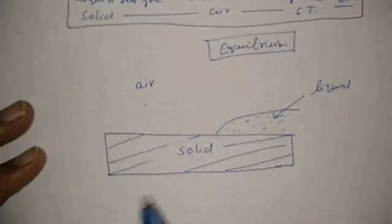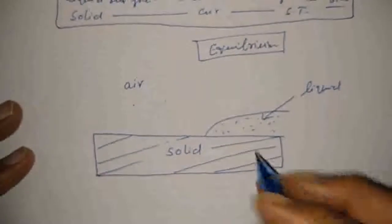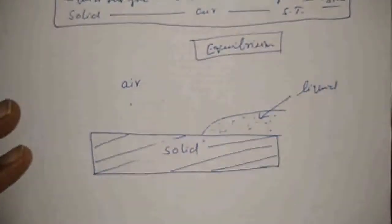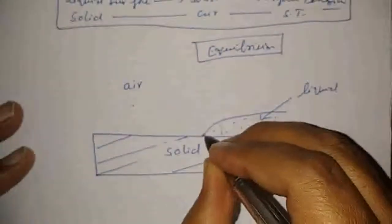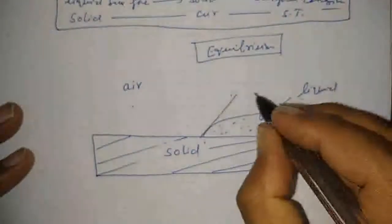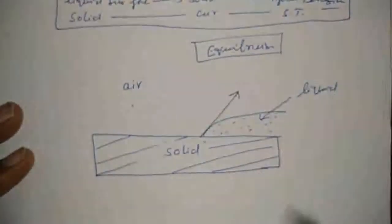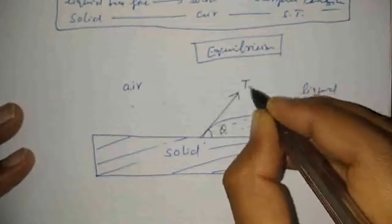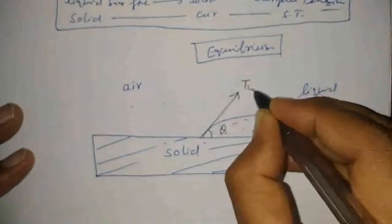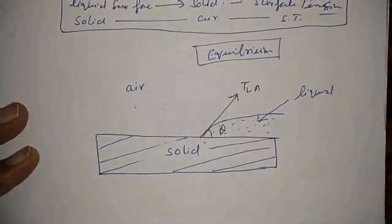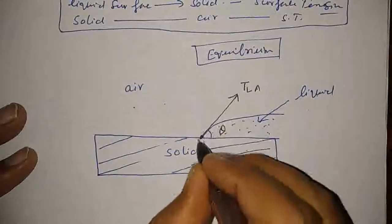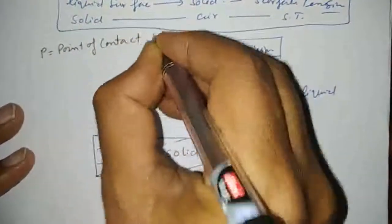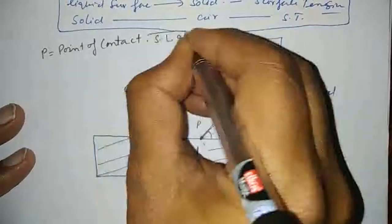Now see how the system is in equilibrium. This is solid and this is liquid. First of all, we are going to define the angle of contact by drawing a tangent here. This is the tangent, so this is the angle of contact between solid and liquid surfaces, theta. This tangent also represents the surface tension of liquid with respect to air, because this is a liquid-air surface. This point P is the point of contact between solid, liquid, and air — all three substances.